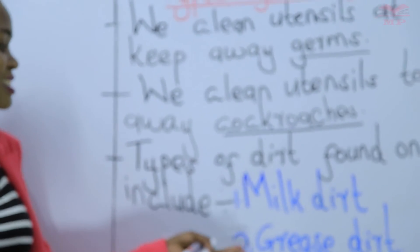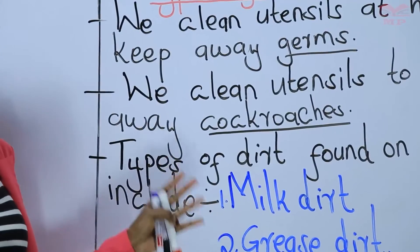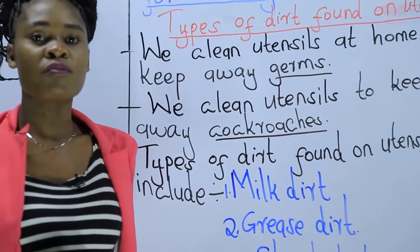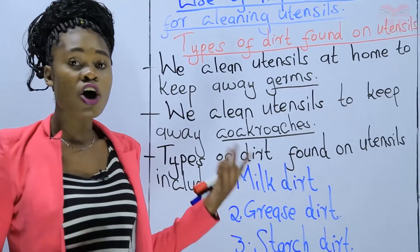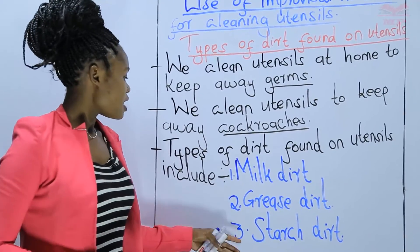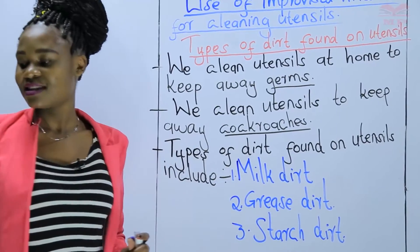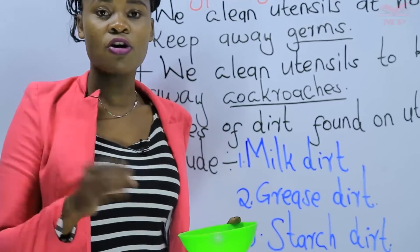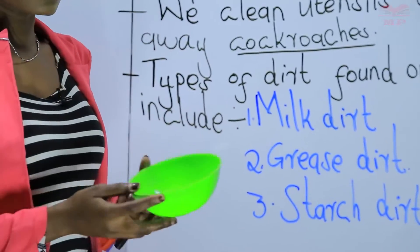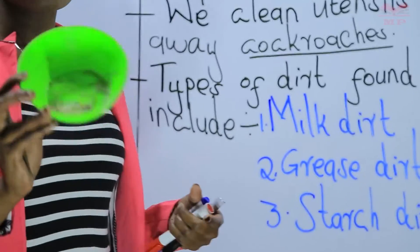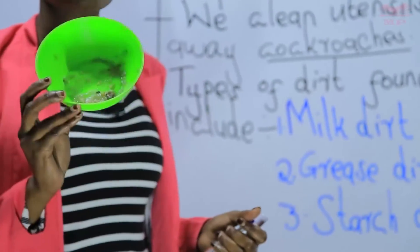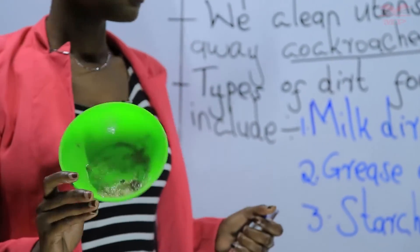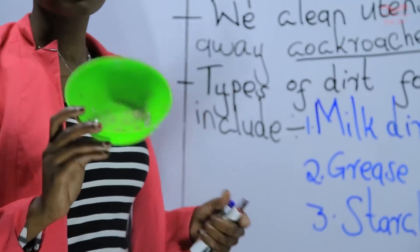Then we have grease dirt. Grease dirt is the dirt that remains on plates or utensils that you've used either to serve meat, fish, or eggs. And lastly, we have starch dirt. Starch dirt is the remains of food that remain on a plate after you've eaten. This is an example of starch dirt — you can see there are remains of food on the plate. We call them starch dirt.